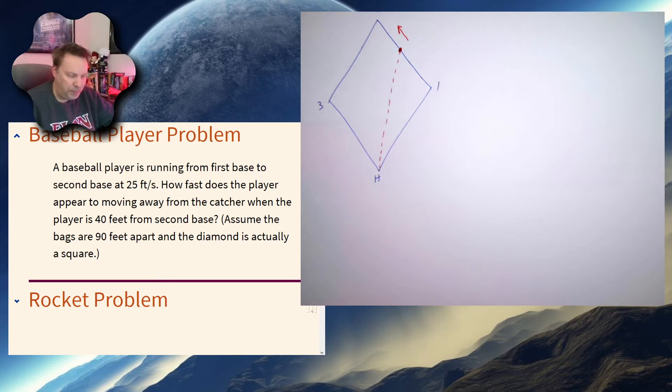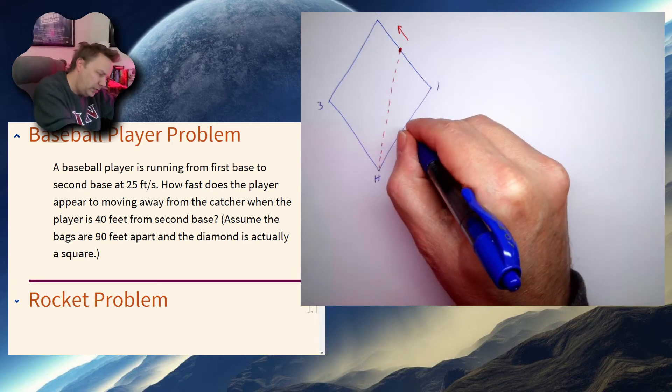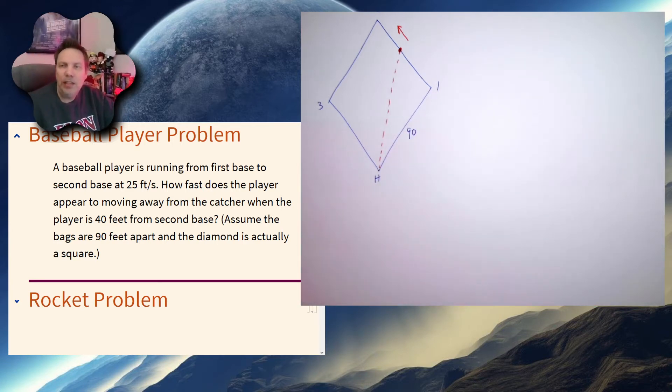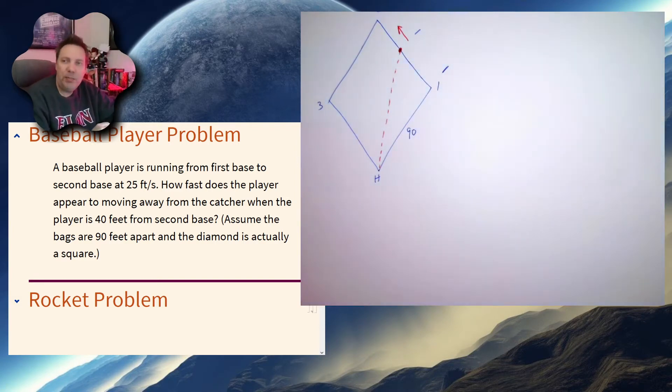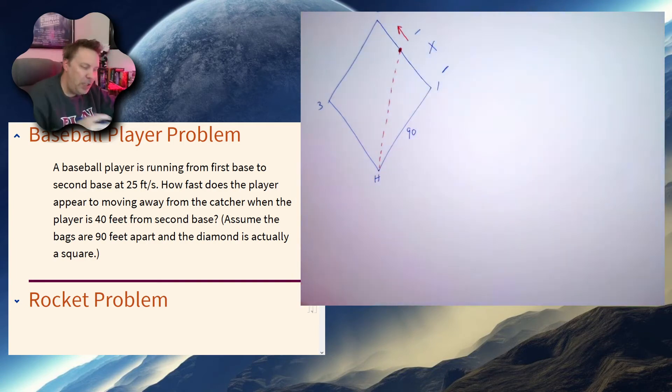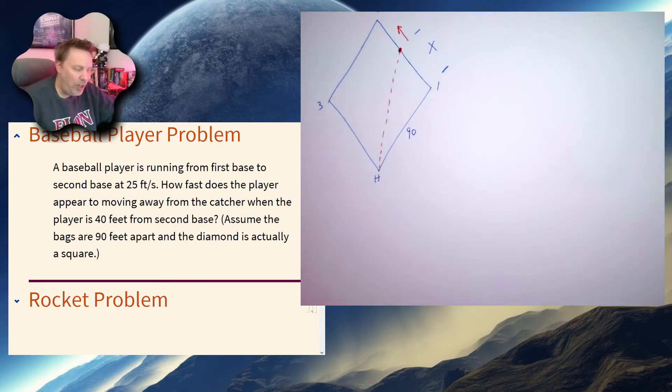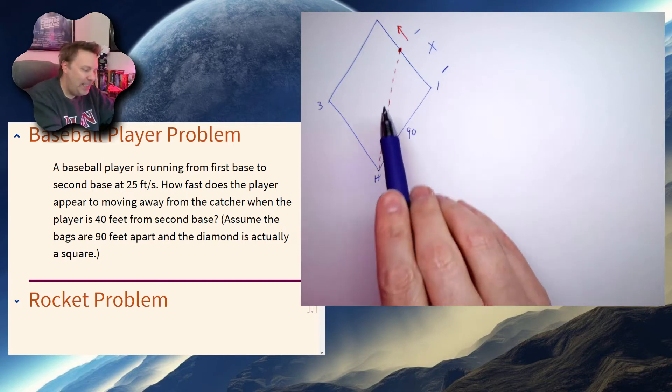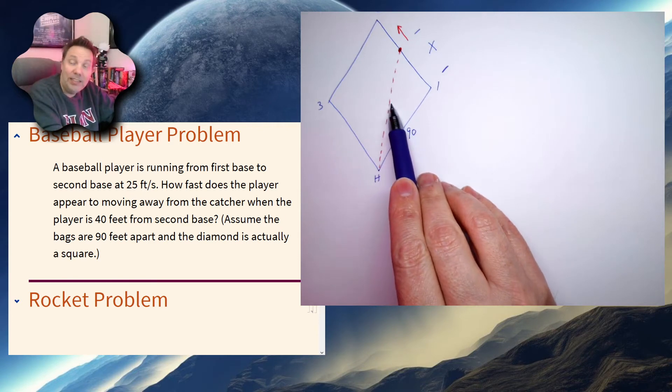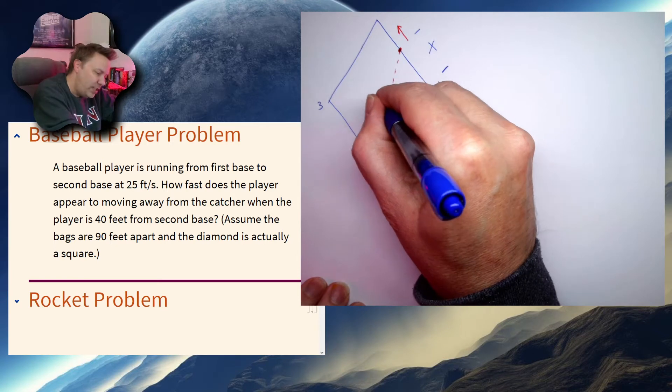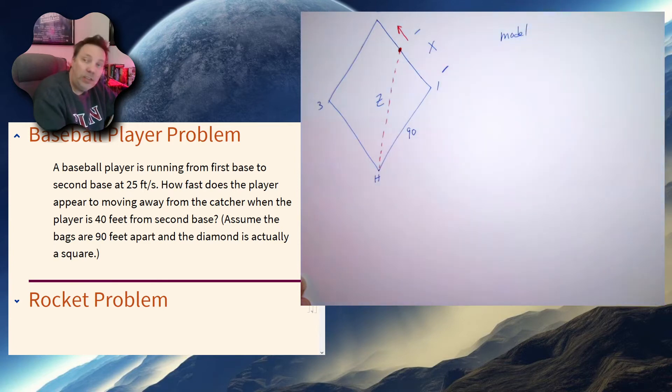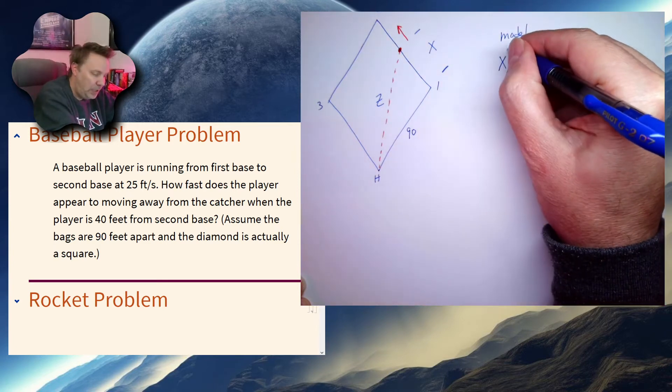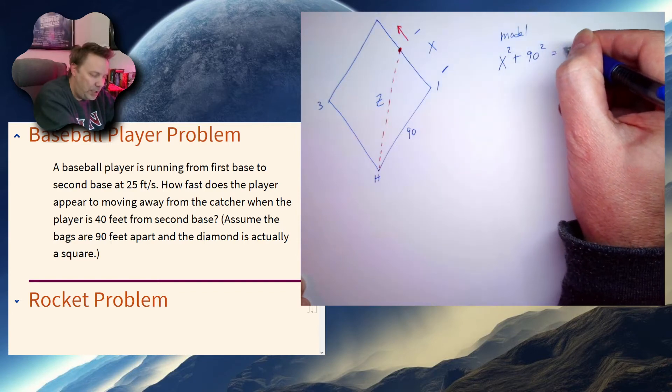So let me just bring up the problem again really quickly. I know certain things. One, this distance is always going to be 90 feet. The distance between first and the player, I am going to call this x because I have a nice triangle sitting there. So I want to know how fast this dotted line, this distance, is changing. Let's just call this z. So what's my model for this problem? A Pythagorean theorem might be good. x squared plus 90 squared is equal to z squared.